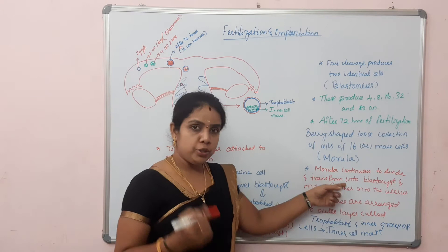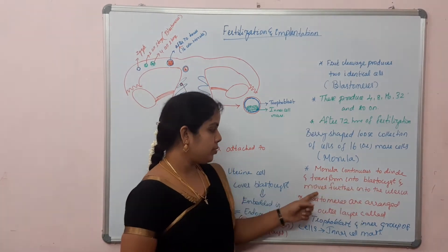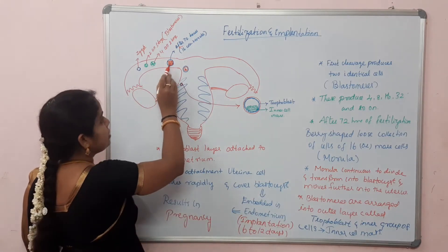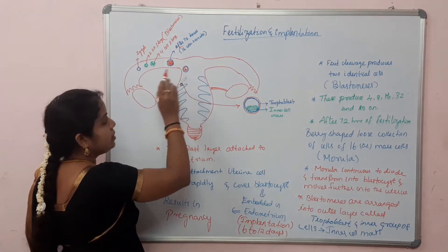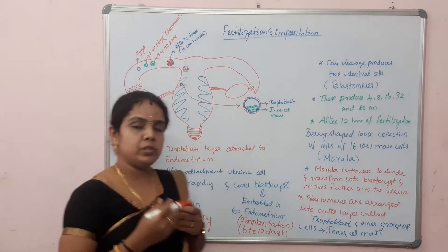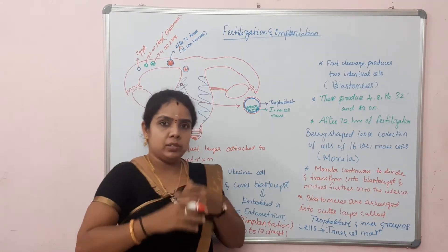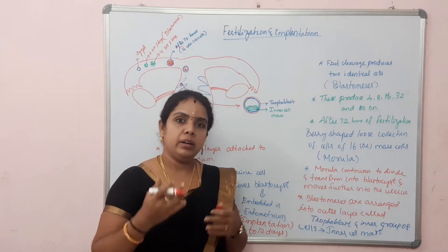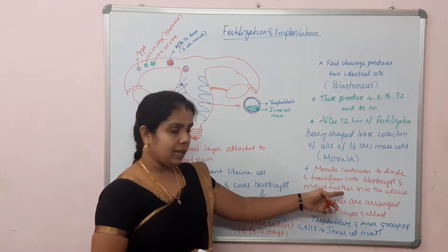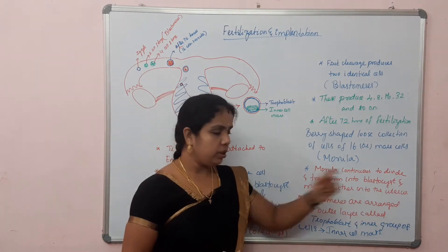Morula continues to divide and transform into blastocyst, and moves further into the uterus. After the morula stage, there is a blastocyst stage. The cells present inside the blastocyst start dividing and form a distinct structure, which we call the blastocyst, and it moves further into the uterus.